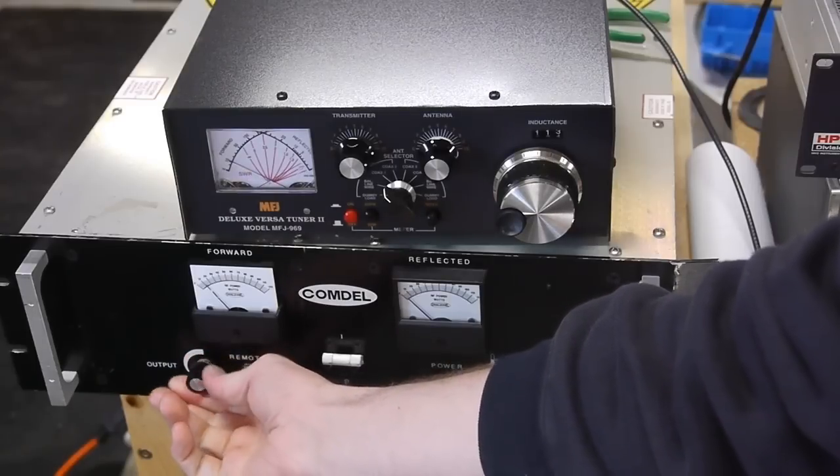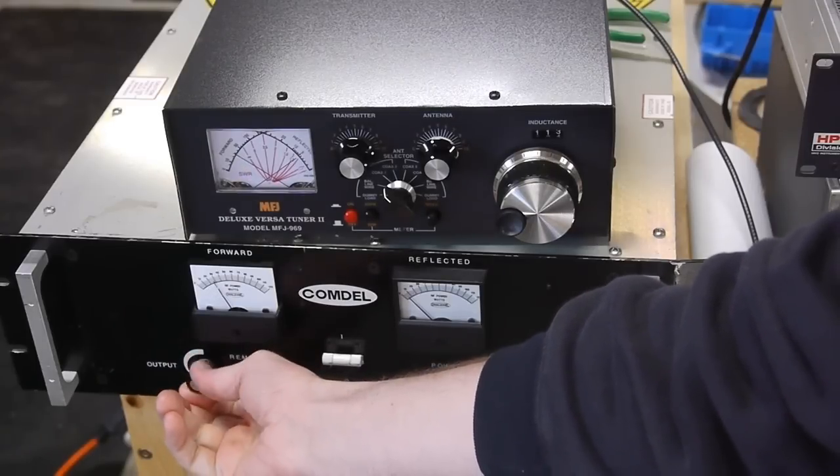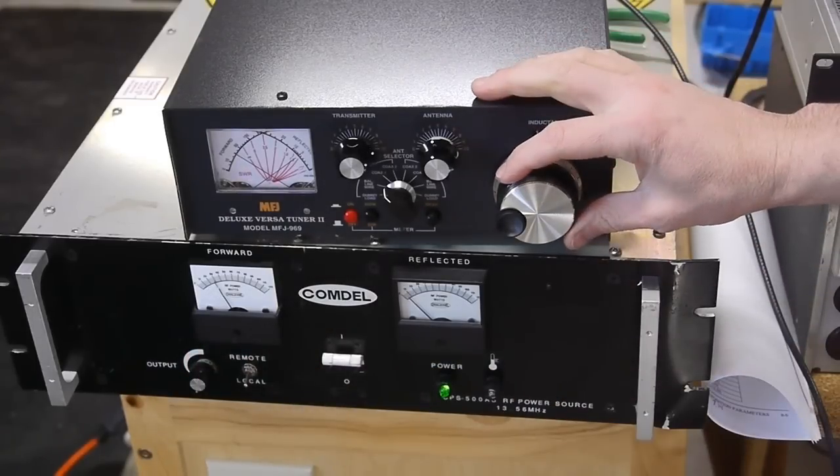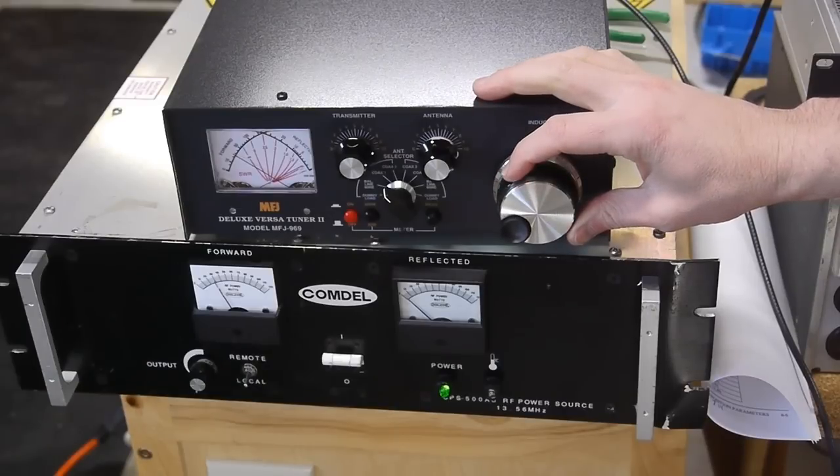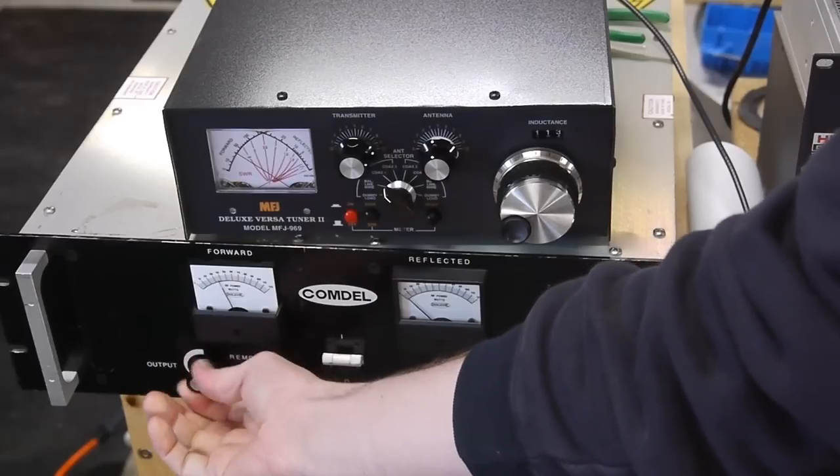So basically this is just a radio transmitter that's broadcasting all of the time at about 13.56 megahertz, and the tuner just allows all that RF energy to go into the coil, as opposed to being reflected back into the transmitter.